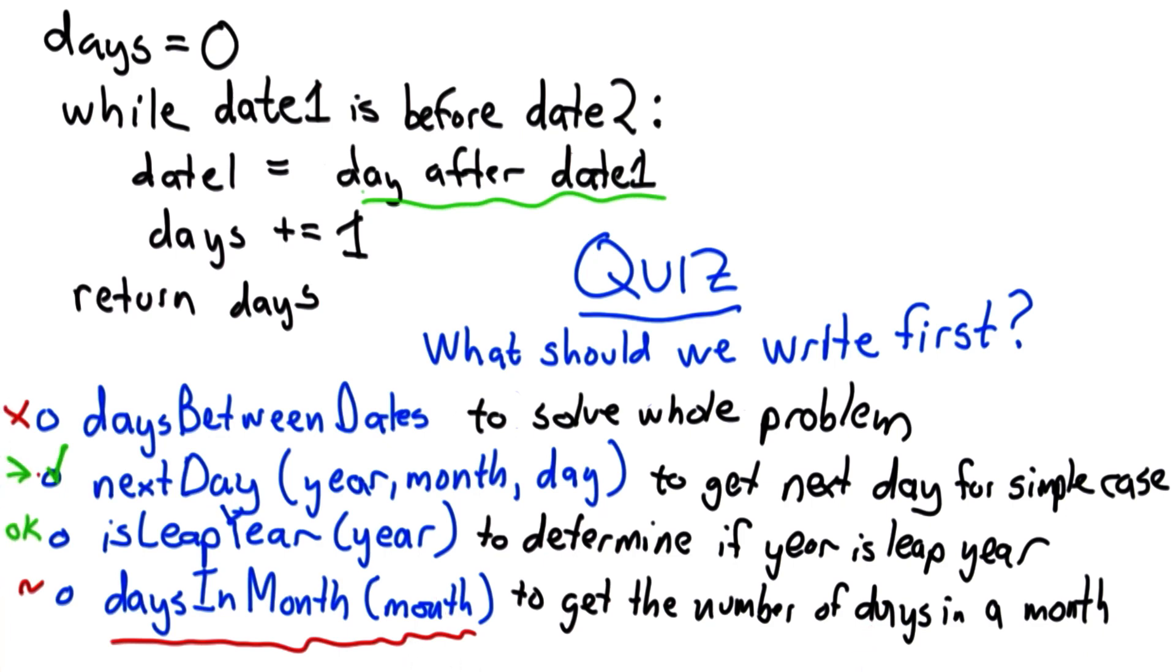So let's start by writing the next day procedure. And to keep things simple, we'll assume that all months have 30 days.